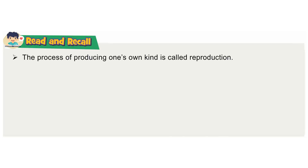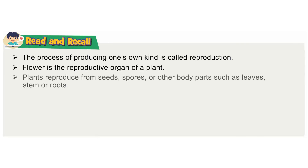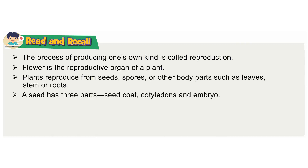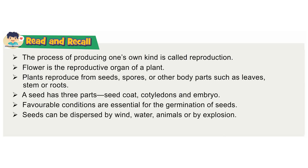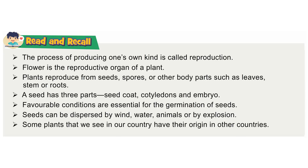Read and recall: The process of producing one's own kind is called reproduction. The flower is the reproductive organ of a plant. Plants reproduce from seeds, spores, or other body parts such as leaves, stem, or roots. A seed has three parts: seed coat, cotyledons, and embryo. Favourable conditions are essential for the germination of seeds. Seeds can be dispersed by wind, water, animals, or by explosion. Some plants we see in our country have their origin in other countries.